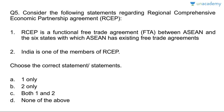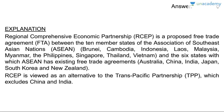Question five: RCEP is a functional free trade agreement between ASEAN and six states with which it has existing FTAs, and India is one of the members. Both statements are correct, answer is C. RCEP — Regional Comprehensive Economic Partnership — involves 10 ASEAN member states: Brunei, Cambodia, Indonesia, Laos, Malaysia, Myanmar, Philippines, Singapore, Thailand, Vietnam — and six FTA partners: Australia, China, India, Japan, South Korea, and New Zealand. RCEP is viewed as an alternative to the TPP, which excludes China and India.